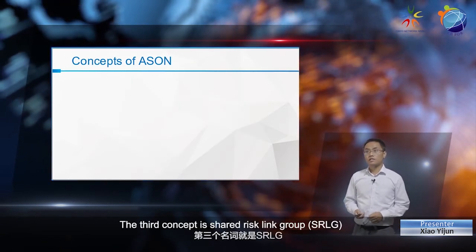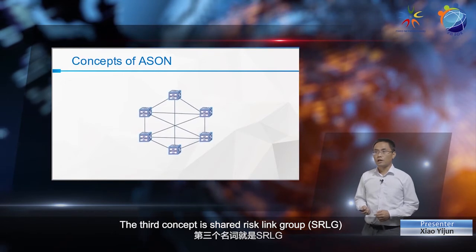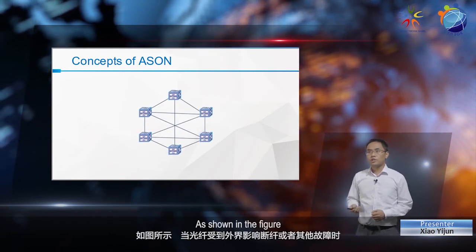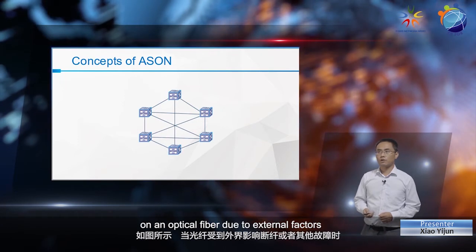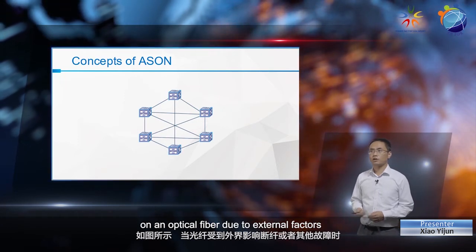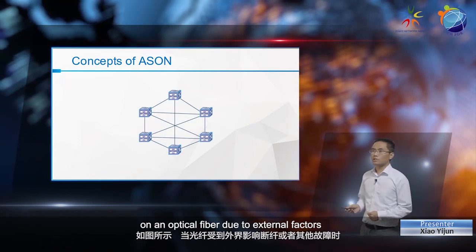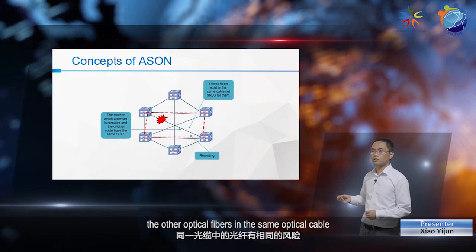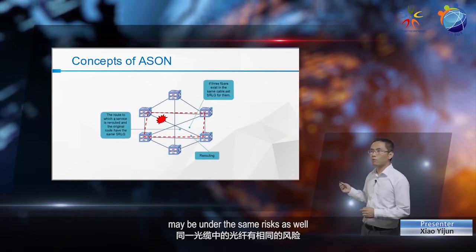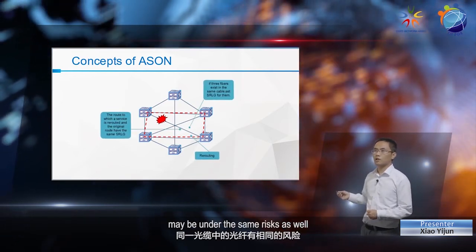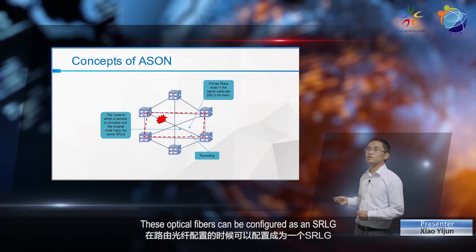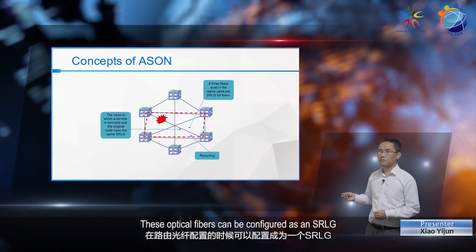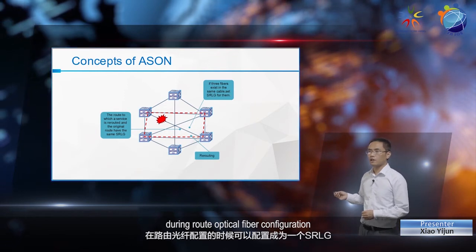The third concept is shared risk link group. As shown in the figure, when fiber cuts or other faults occur on an optical fiber due to external factors, the other optical fibers in the same optical cable may be under the same risks as well. These optical fibers can be configured as an SRLG during route optical fiber configuration.